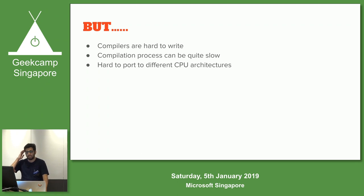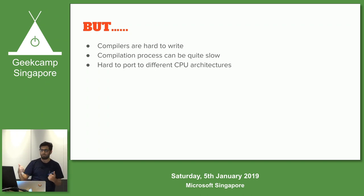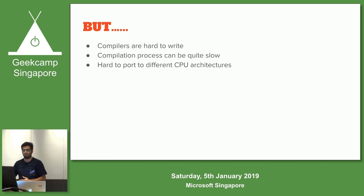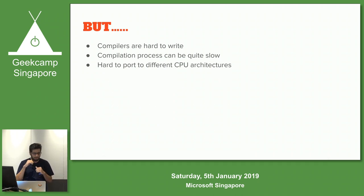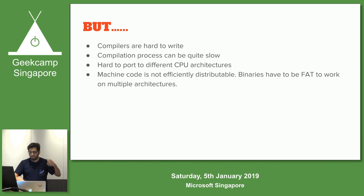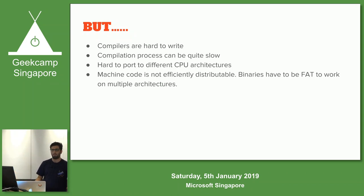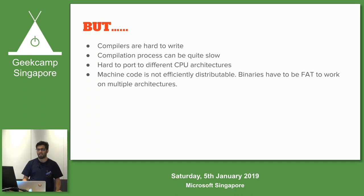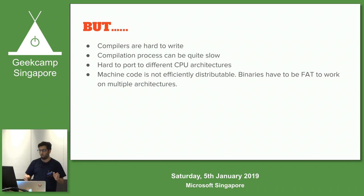Another big problem with compiled languages is that the instructions are literally what the CPU will execute. But there are so many different CPUs - ARM, Intel, ARM64, ARMv7, ARM64E. The compiler will generate for a very specific CPU architecture. And the problem is it's very hard to distribute. If I have a binary for ARM64, and the phone I'm deploying to has ARMv7, I need to combine all the binaries into a fat binary and ship them all together to work on multiple architectures. This causes binary sizes to explode.